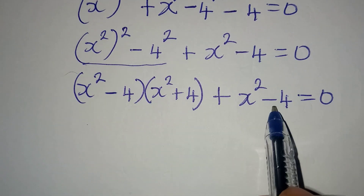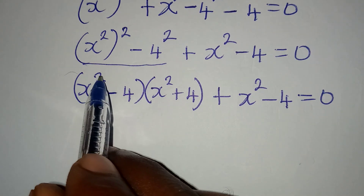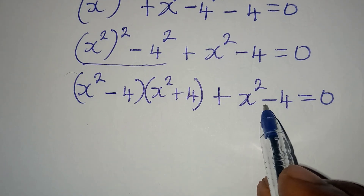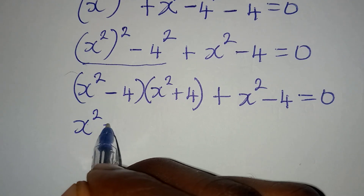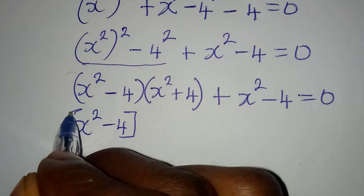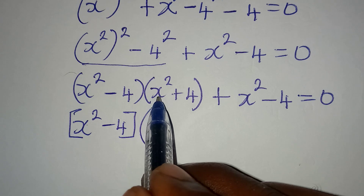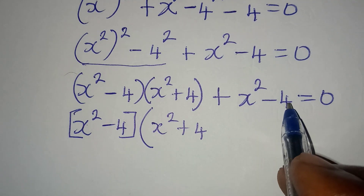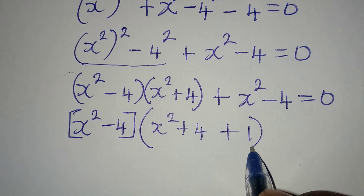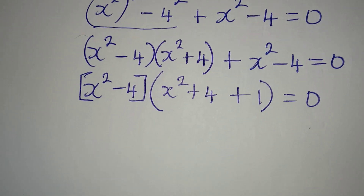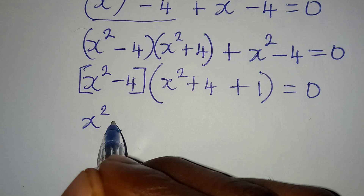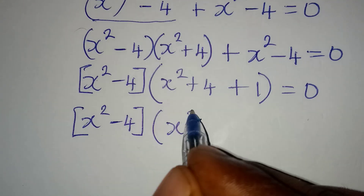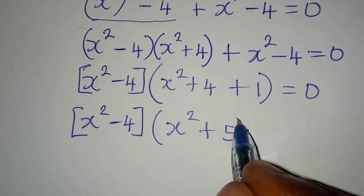If you look at this side and here, we have something common, and that is x squared minus 4. So I have to factor out x squared minus 4 because it appears here and also here. Factoring it out, in the bracket I will have x squared plus 4, and x squared minus 4 has come out so it's going to be plus 1. That gives us x squared minus 4, then in the other bracket x squared plus 4 plus 1, equal to 0.